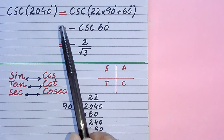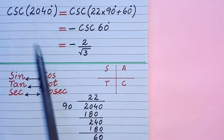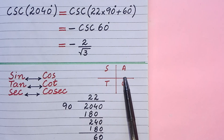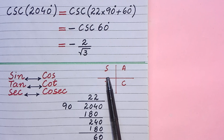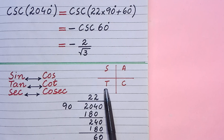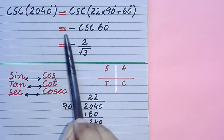We have to do three things. First, we decide about the sign of the given function using the Cartesian plane. The angle is 2040 and is positive, so we move in the anti-clockwise direction: 360, 720, 1080, 1440, 1800, 1890, 1980, and 2040 belongs to the third quadrant. In the third quadrant, tan and its reciprocal cot are positive and all other trigonometric functions are negative. Our function is cosec, which is negative here, so the sign is minus.